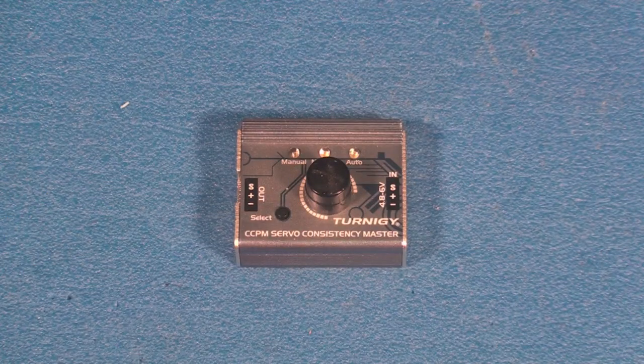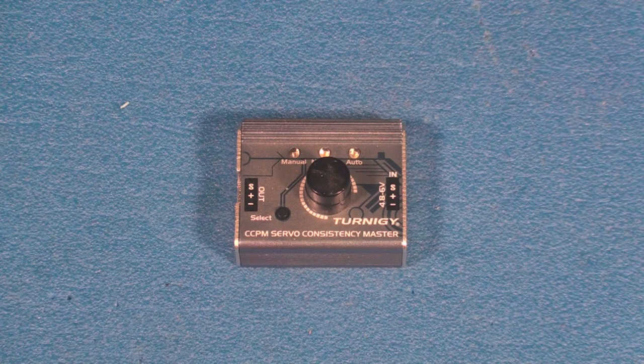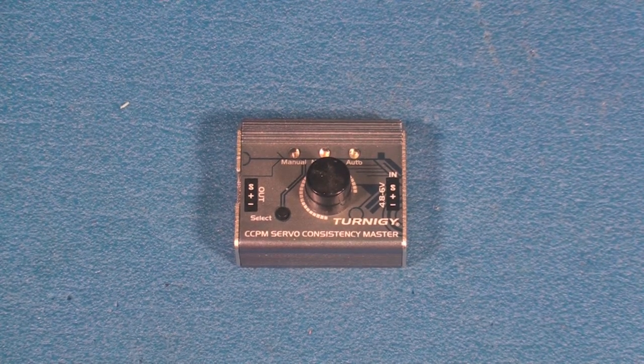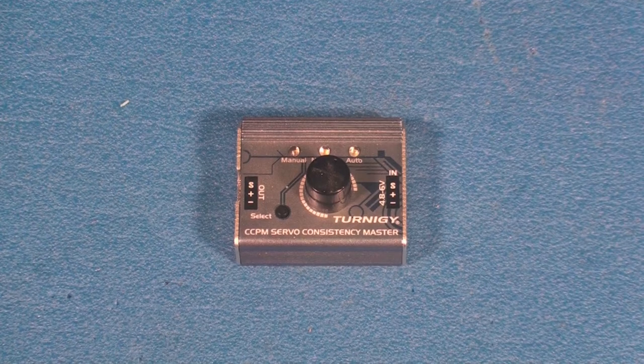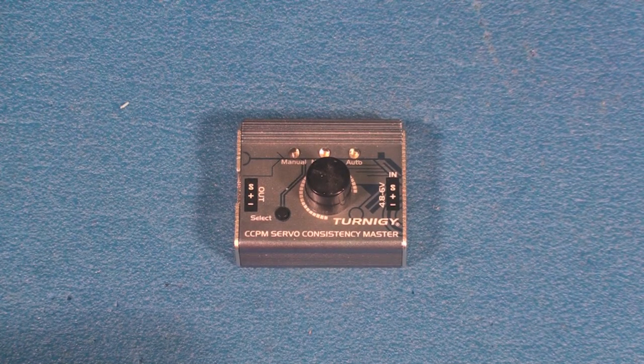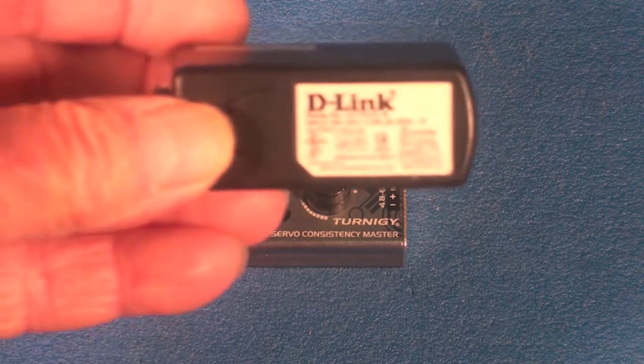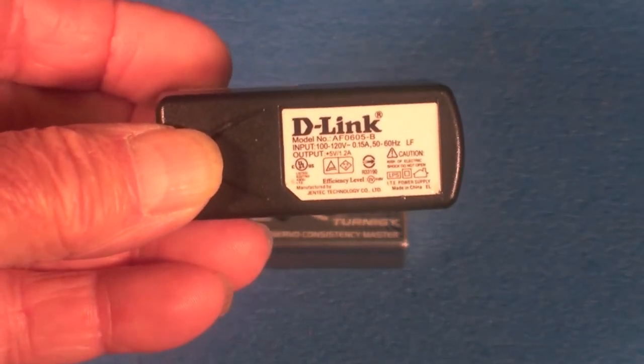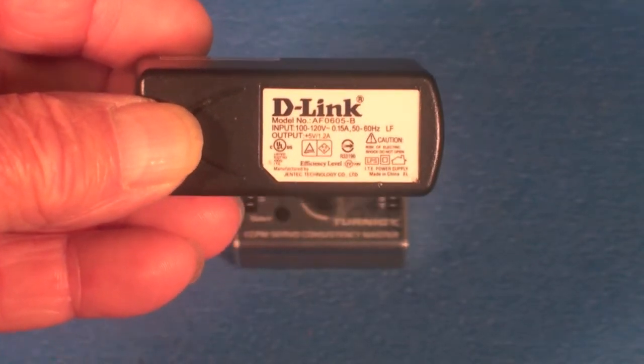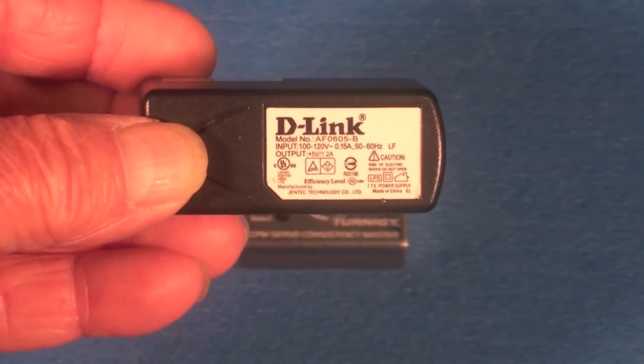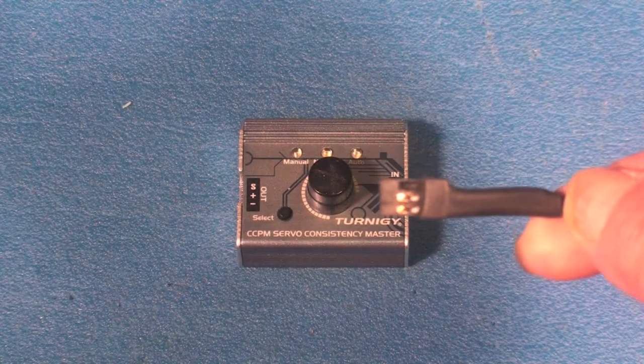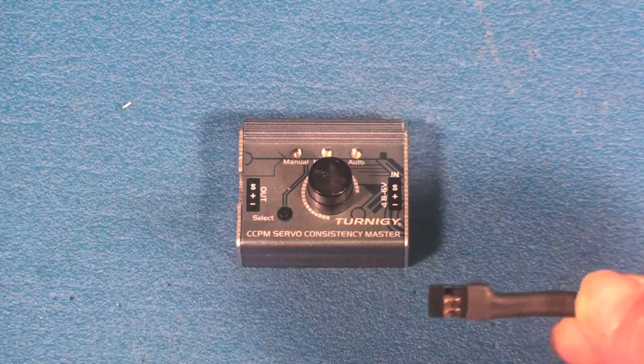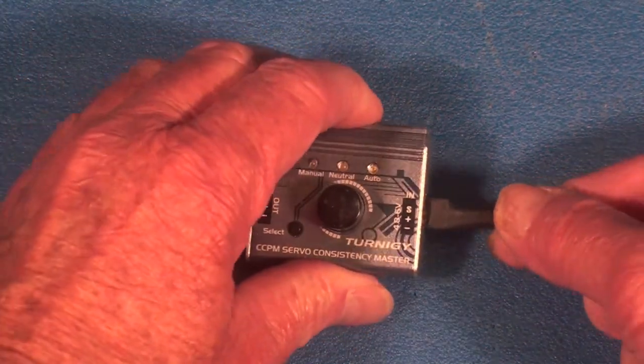A handy little tester to have is the Turnigy CCPM servo consistency master. It's a pretty handy little servo tester that has to be powered up by 5 volts. What I use is a D-Link router power module to power it. I simply cut the coaxial DC power plug off of it, soldered on a servo connector, and got it plugged in and working great.